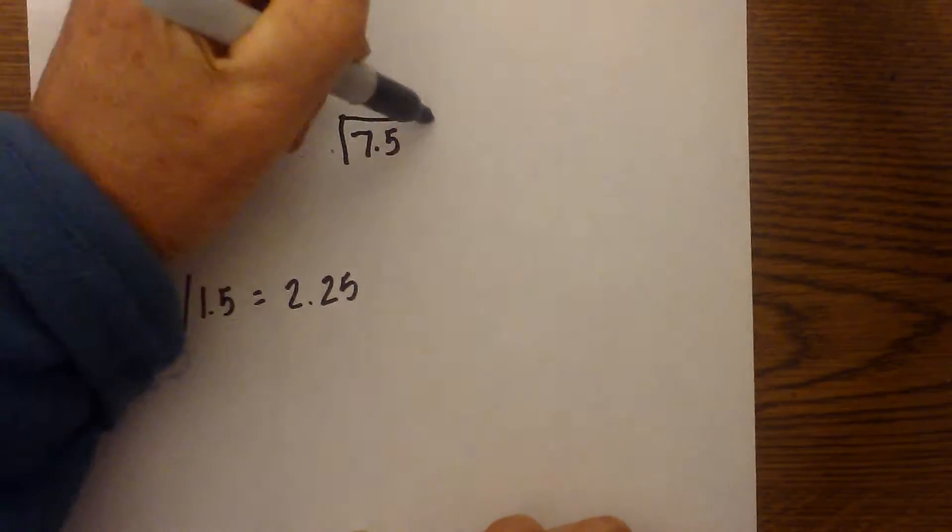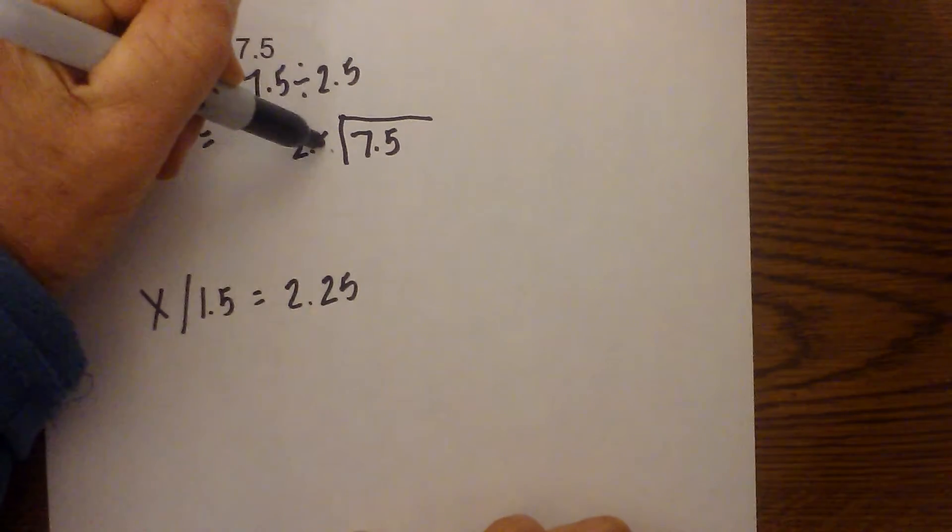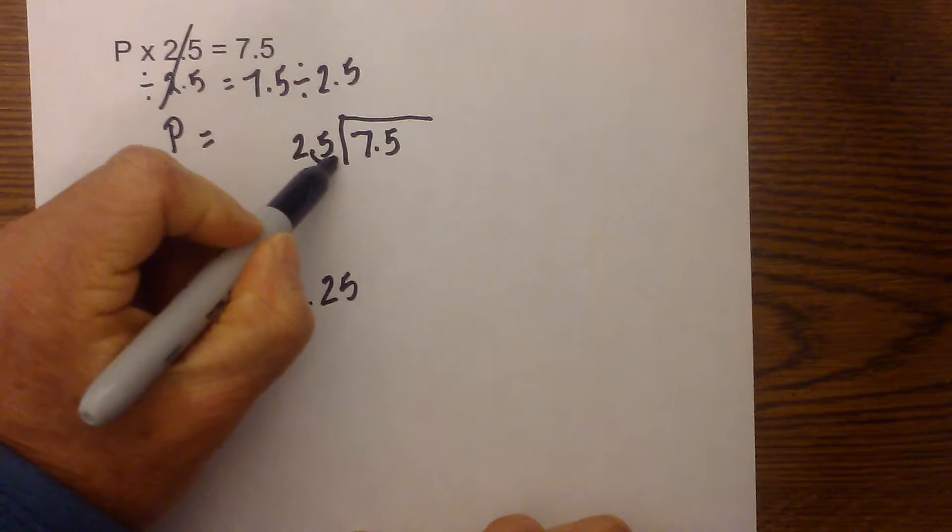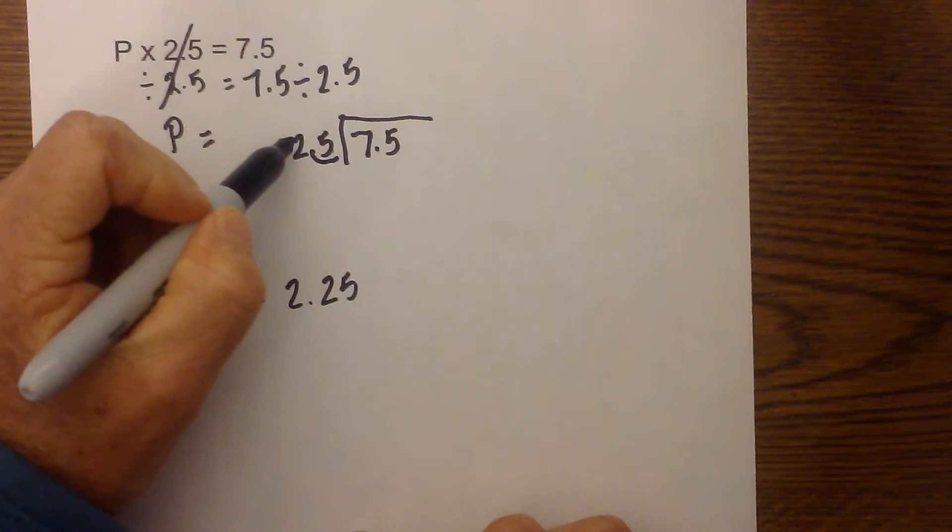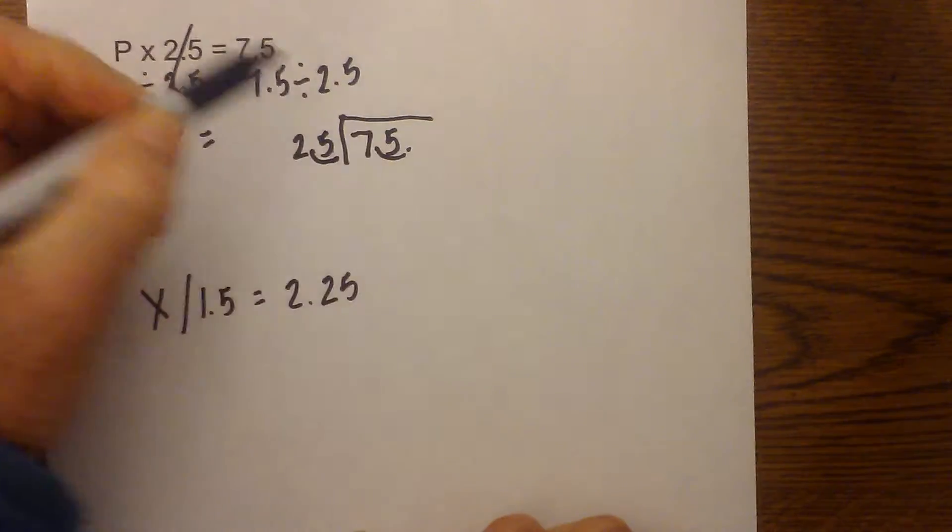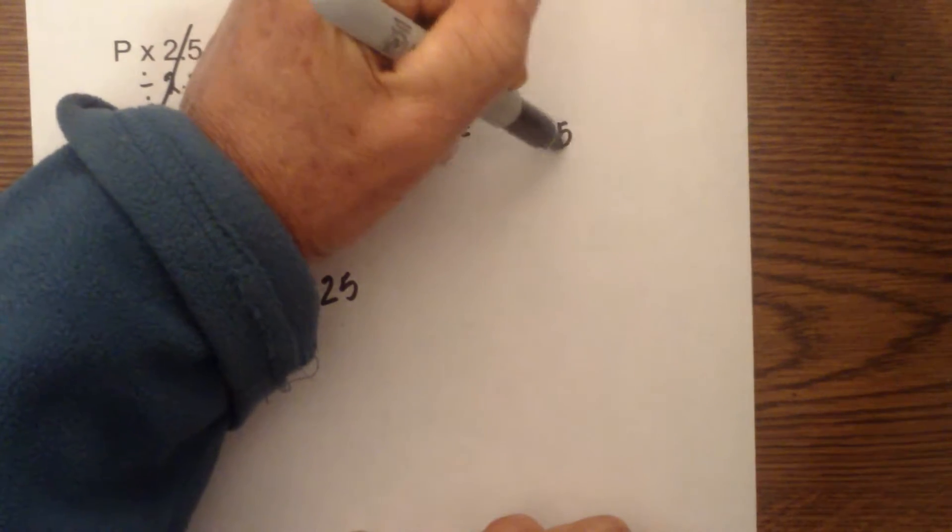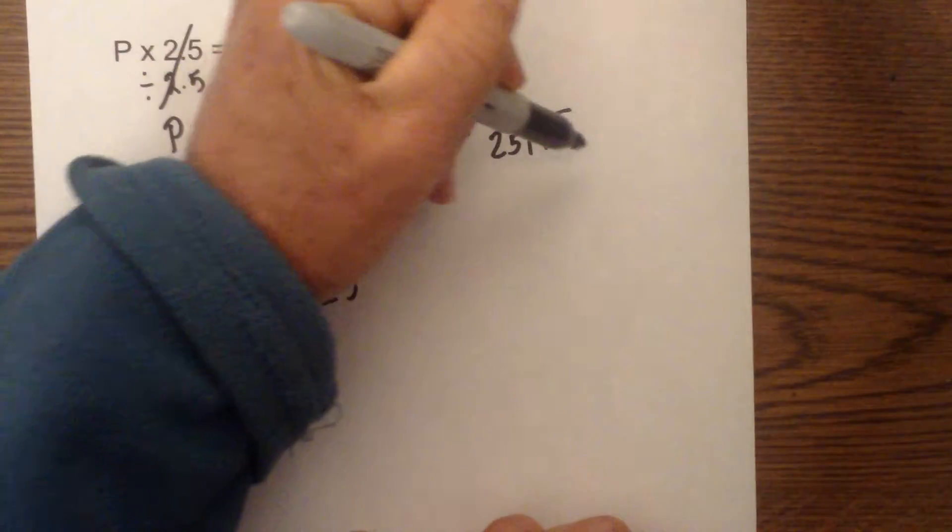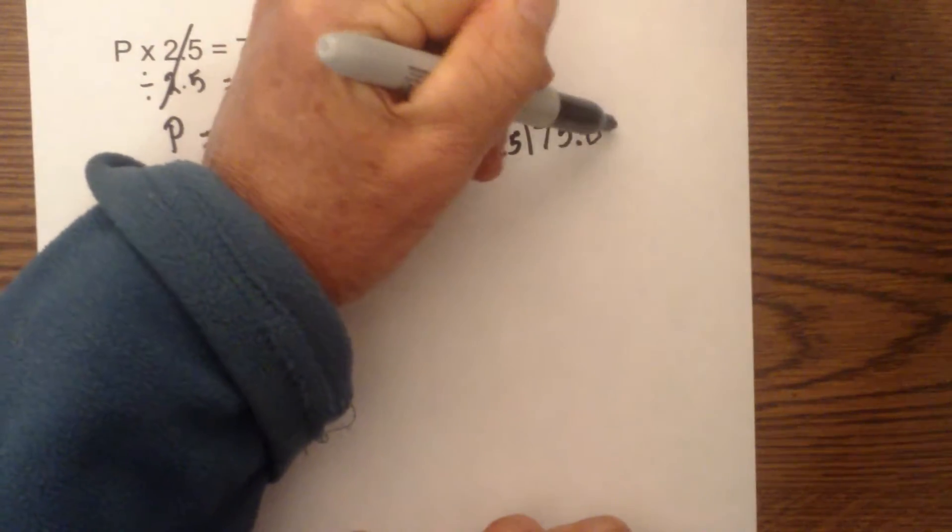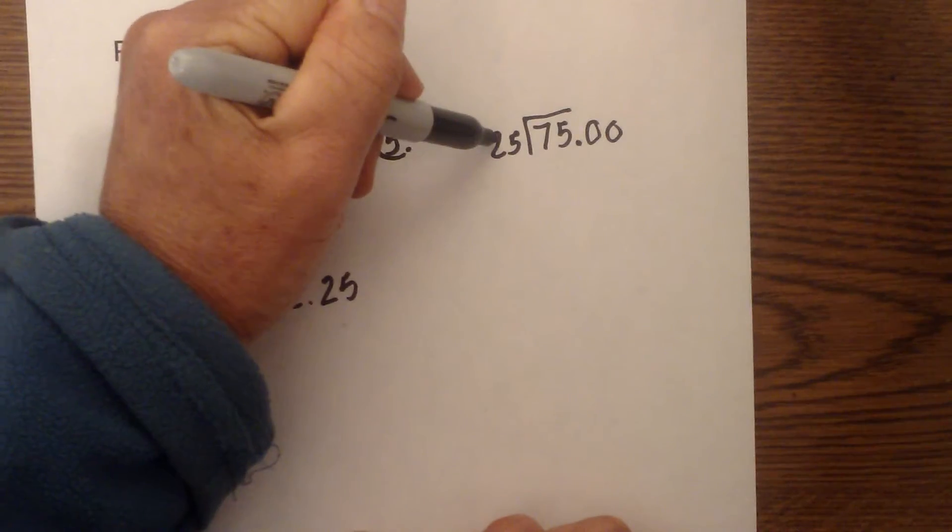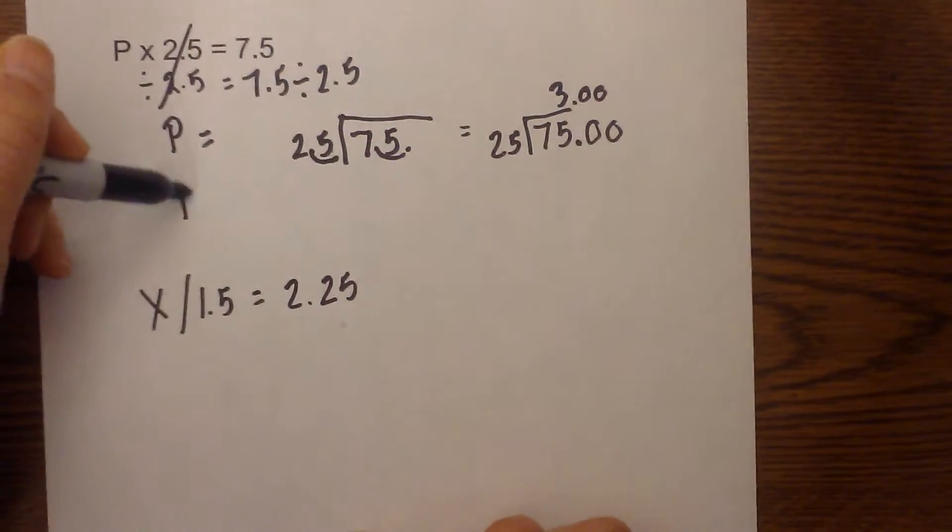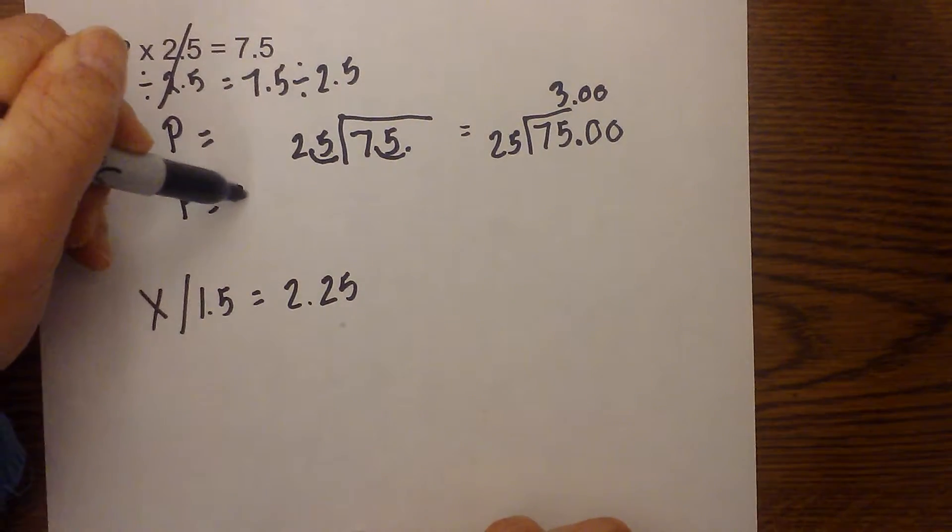We have 7.5 and as I say, we are going to put it in the doghouse. Now we cannot have a decimal on the outside of the doghouse. So I am going to move it one place to the right. And what I do, I have to keep it the same. What I do on the outside, I must do to the inside. So now this just becomes 75 divided by 25. But I have to keep my decimal place there. I can add zeros if you like. And so 25 will go into 75 three times. So it becomes P is equal to 3.